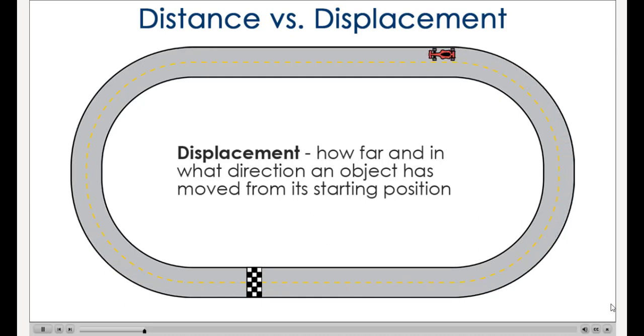In the case of the race car moving around a track, the distance the car has traveled is represented by the length of the blue curve that traces its position. The displacement of the car, at any instance, is represented by the green arrow. The length of the arrow is the distance from the starting position to the position of the car. The arrowhead indicates the direction from the starting position to the car at that instant.